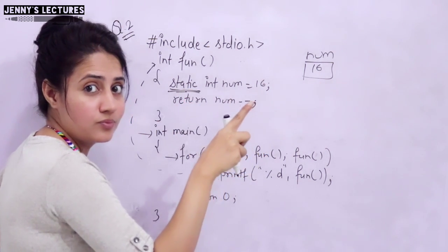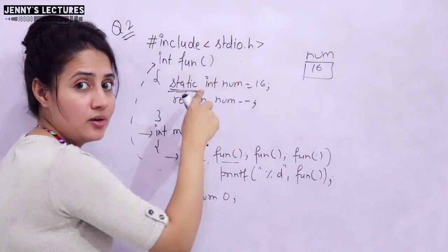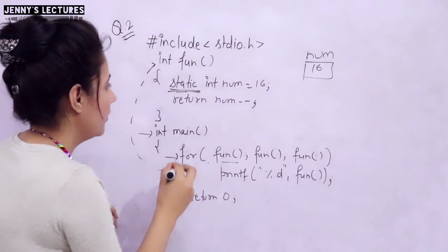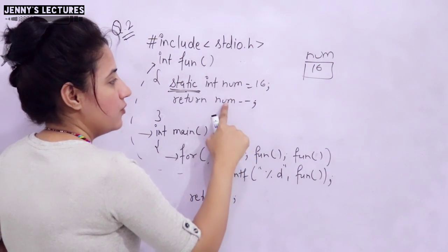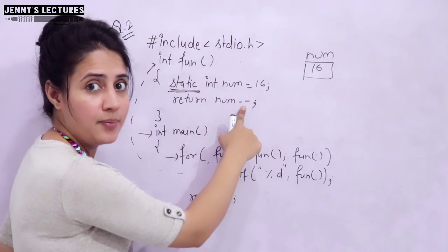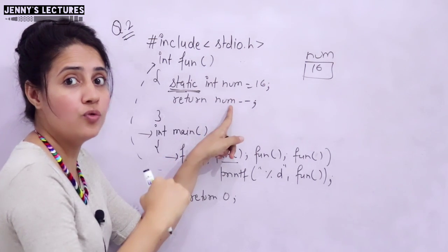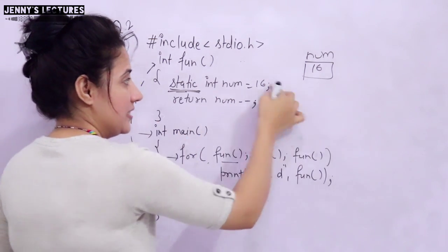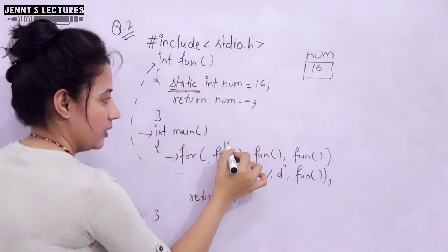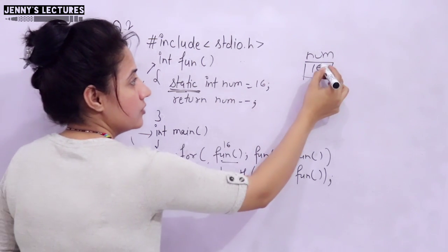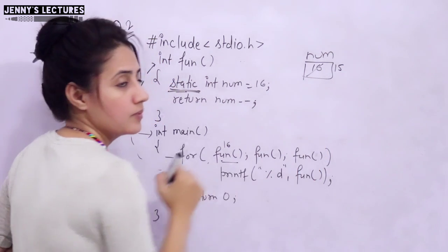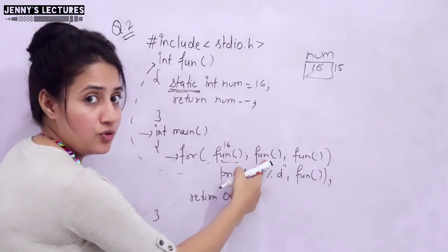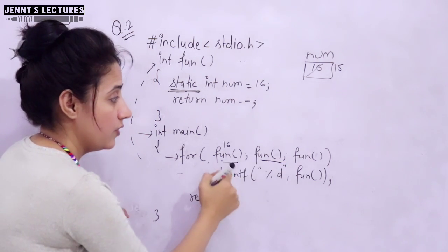The static variable will retain its previous value. Its scope is local but its lifetime is till the end of the program. Now 'return num--' — since it is post-decrement, it will return 16 first, then num becomes 15. So 16 is returned for the initialization call, and then num is decremented to 15.